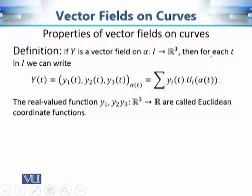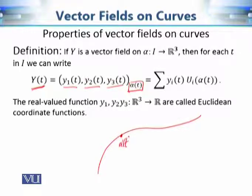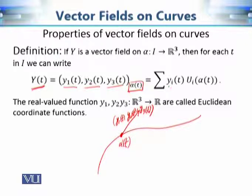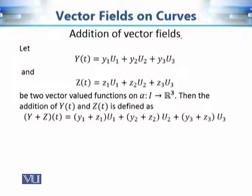Now let's discuss properties of a vector field on a curve. Consider the vector field y(t) with three components y₁(t), y₂(t), y₃(t), which are functions of the parameter t. The point of application is alpha(t), and in compact form it is written as yᵢ(t) · uᵢ(alpha(t)), where i varies from one to three.